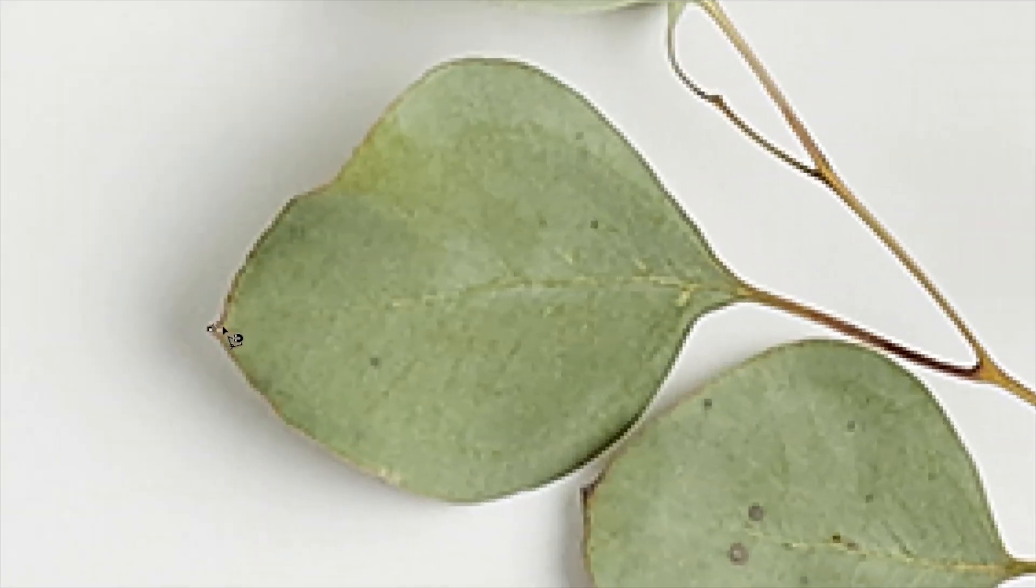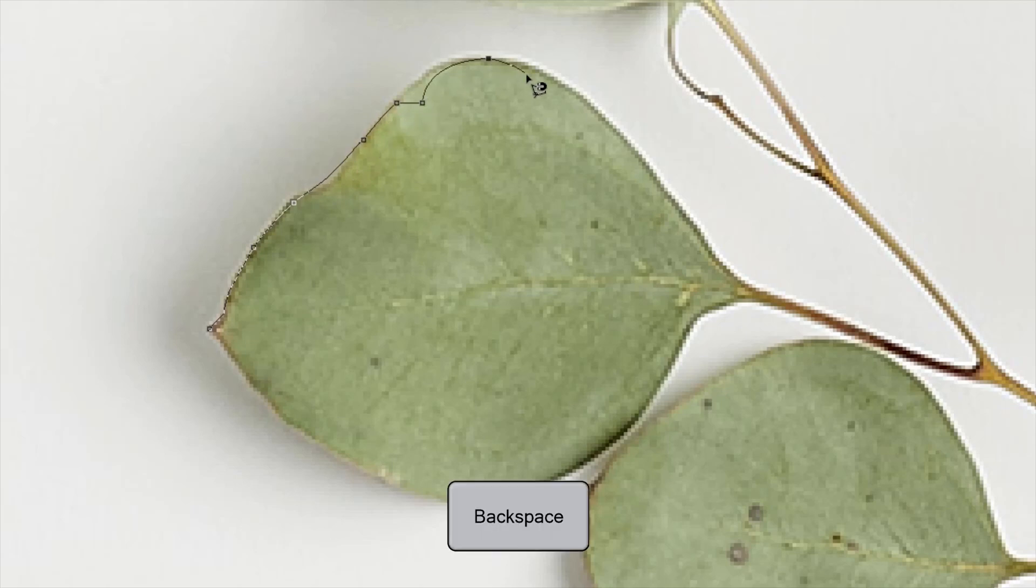When you go about selecting an object and drop an anchor point on the wrong spot either manually or by the tool itself, you can delete the anchor point by hitting backspace. Keep hitting backspace to delete the previous anchor points one after the other.